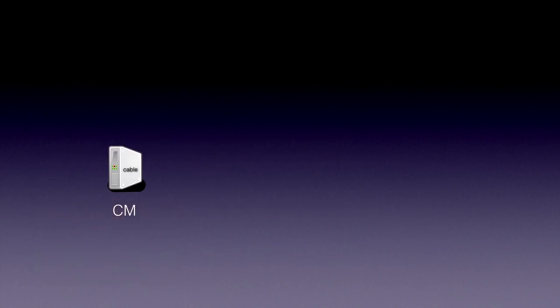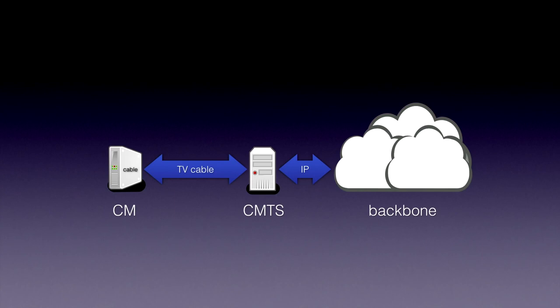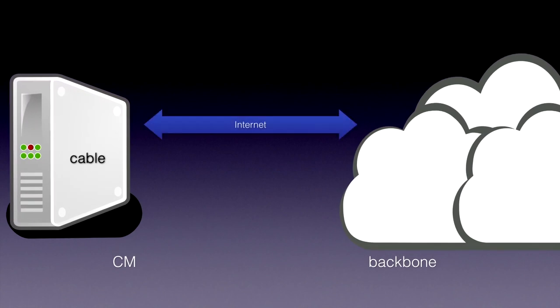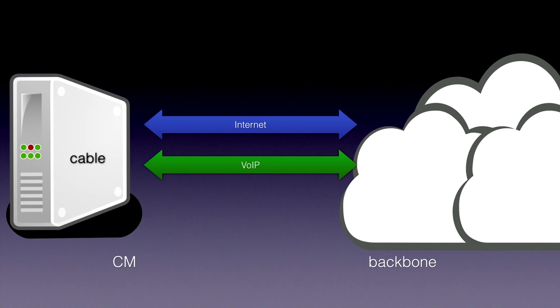So how does DOCSIS work? Just a small high-level introduction. Basically you have a cable modem connected using your TV cable line to a CMTS — just a translation service that takes all the DOCSIS-specific stuff and basically gives you IP routing into something behind it. However, it doesn't just give you one line — it actually gives you three: one for your internet (which you actually see when you plug into the device), another for Voice over IP, and one more that I would call the admin line — the provisioning line.